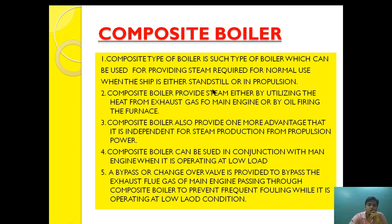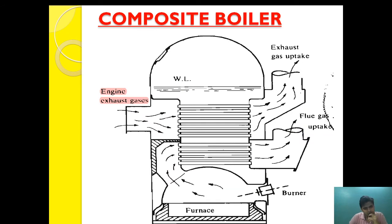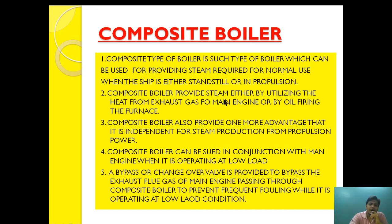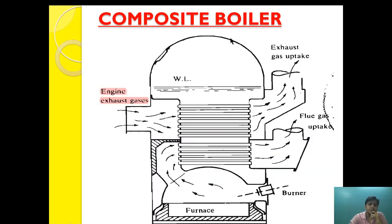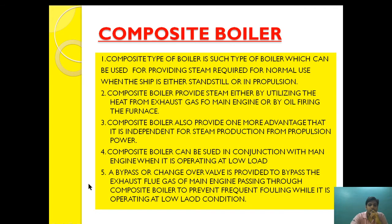The composite-type boiler can provide steam for normal use whether the ship is standstill or in propulsion. Since the systems are independent, it can be used in both standstill and running conditions. The composite boiler provides steam either by utilizing heat from the exhaust gas of the main engine or by oil-firing the furnace. It is also independent for steam production from propulsion power.